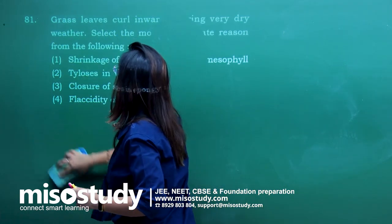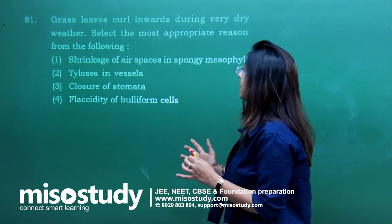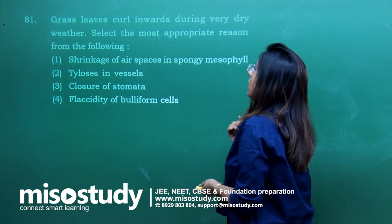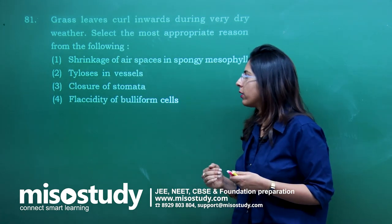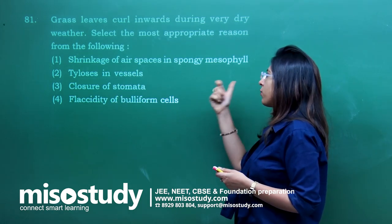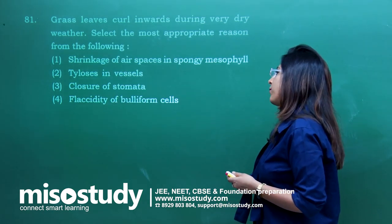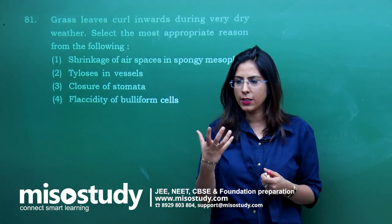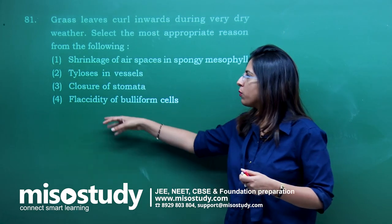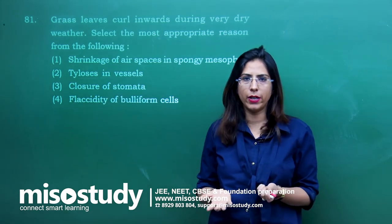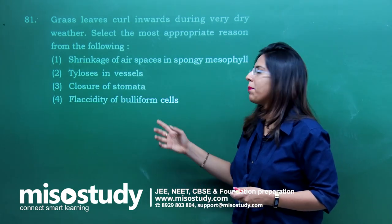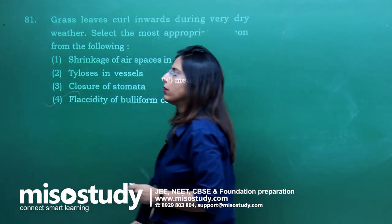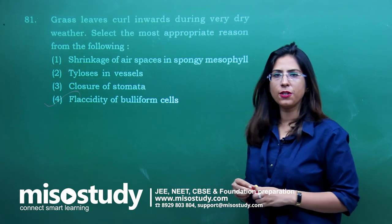Question number 81 — grass leaves curl inward during very dry weather. Select the most appropriate reason. Options: shrinkage of air spaces in spongy mesophyll, tylosis in vessels, closure of stomata, or flaccidity of bulliform cells. The correct answer is option 4 — flaccidity of bulliform cells. When bulliform cells lose water they become flaccid, causing the leaf or grass to curl. When they become turgid they become straight.